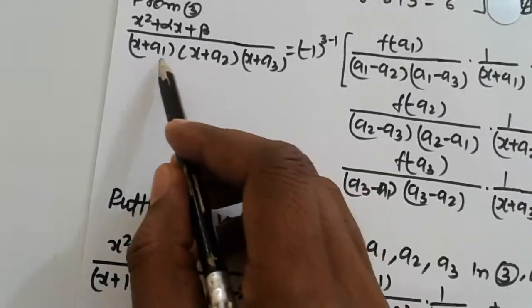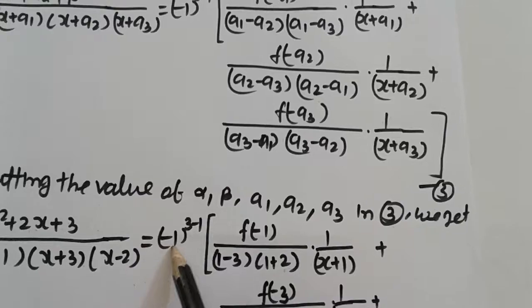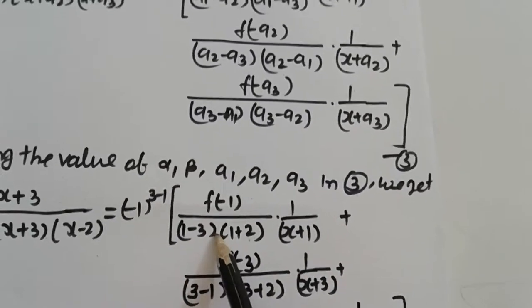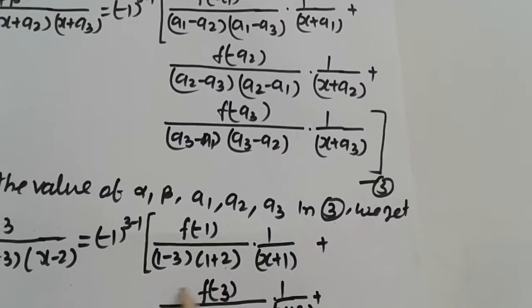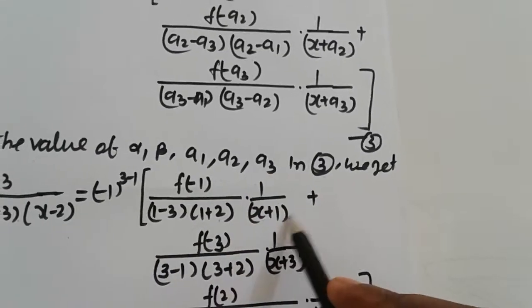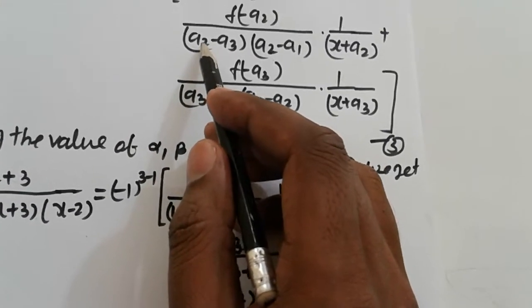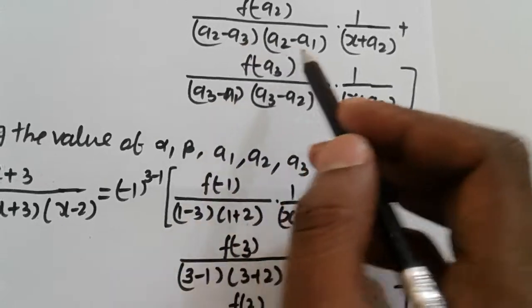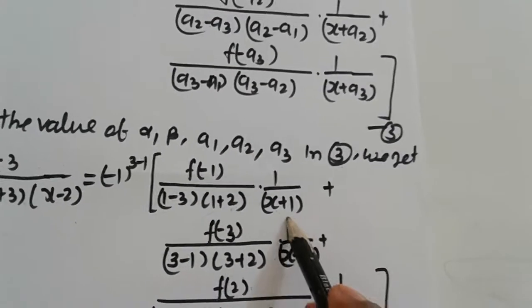With alpha equal to 2 and beta equal to 3, the first term has f of minus 1 in the numerator, denominator (1 minus 3)(1 plus 2), dot 1 upon (x plus 1). The second term has f of minus 3, denominator (3 minus 1)(3 minus 2) giving (3 minus 1)(minus 3 plus 2), dot 1 upon (x plus 3). The third term has f of 2, with denominator (minus 2 minus 1)(minus 2 minus 3), dot 1 upon (x minus 2).